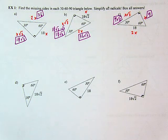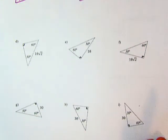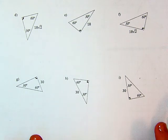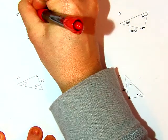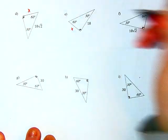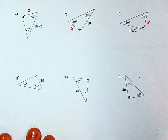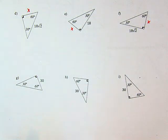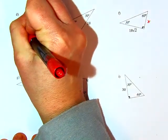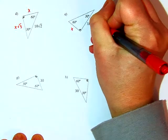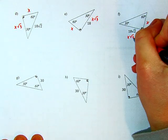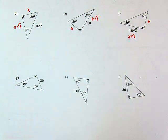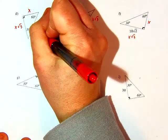Next row, same deal. First I label all my sides: my short leg is x, opposite the 30, the longer leg opposite the 60 is x root 3, and the hypotenuse — the longest side opposite the right angle — is 2x.